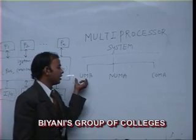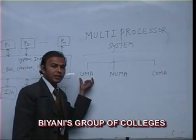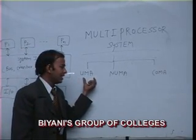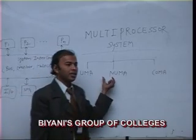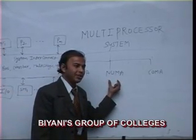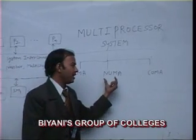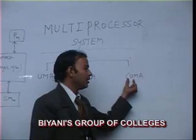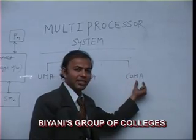The three types of multiprocessor architecture are: first, UMA — Uniform Memory Access; second, NUMA — Non-Uniform Memory Access; and last, Cache-Only Memory Architecture.